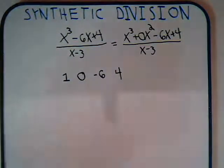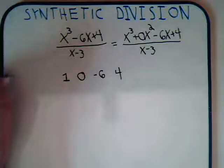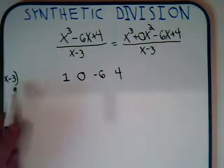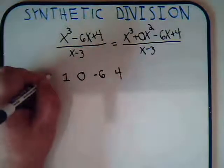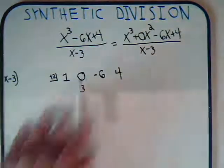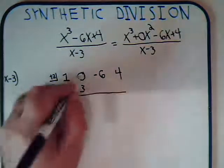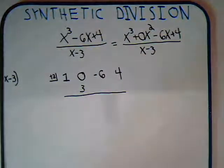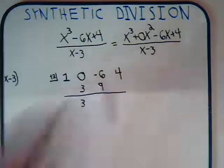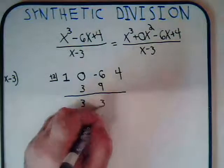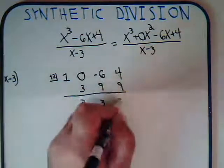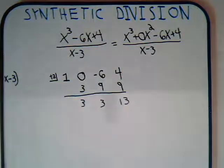Whatever number appears in the divisor, take the negative of it. This is minus 3, so the negative of that is plus 3. Write that number down and place it beneath the second coefficient to form a column. Then you just add and multiply: 0 plus 3 is 3; times 3 is 9; minus 6 plus 9 is plus 3; 3 times 3 is 9; 4 plus 9 is 13. And that's it — we're finished.